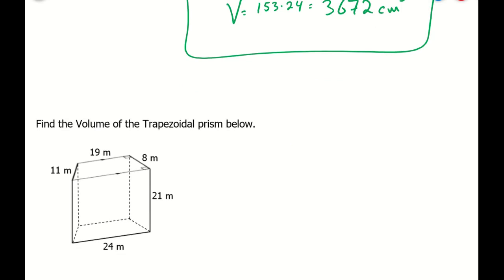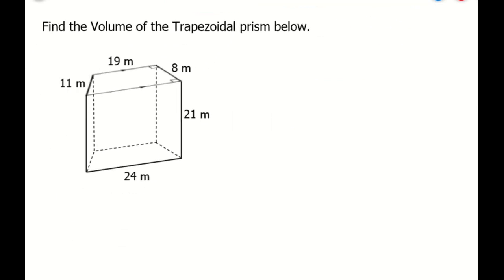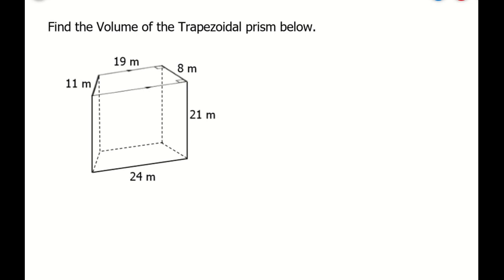So that was for a rectangular prism. Now here we have a trapezoidal prism — I know it's a trapezoid because they're telling me it's a trapezoid. When we're looking for the height of the base, or the height of a trapezoid, it's the perpendicular distance from one base to the other. Those little 90-degree angles tell me that this measurement here is the height of the base, not the height of the prism. The height of the prism is from one base face to the other base face.